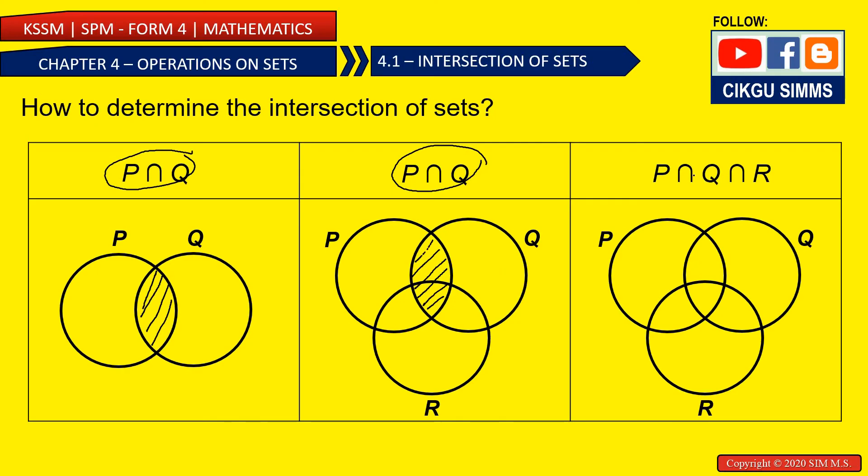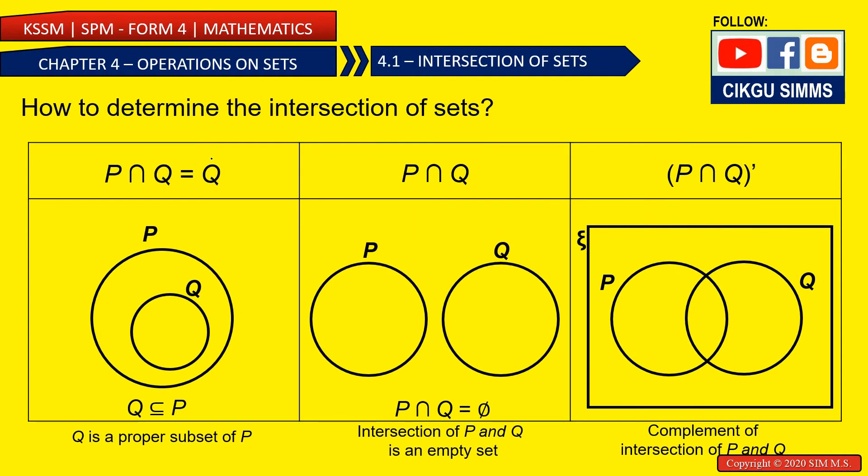And P and Q and R. The intersection between these three, and it's common, only this part. Only the middle part. So for this one, P and Q is equal to Q. So P and Q is this part.